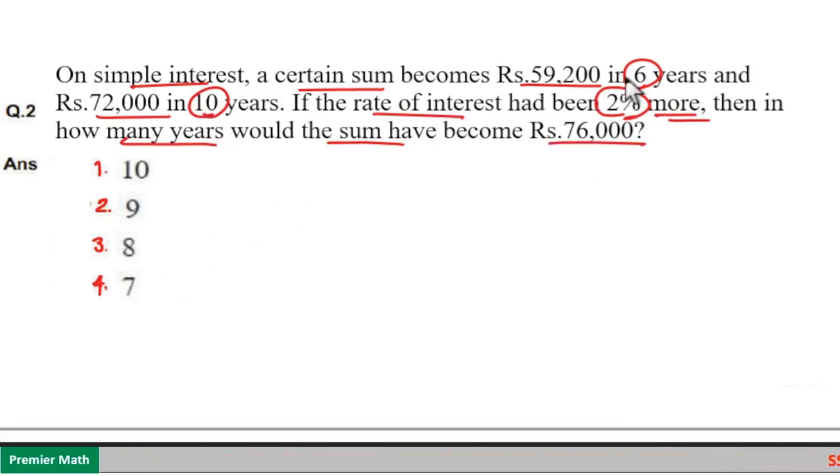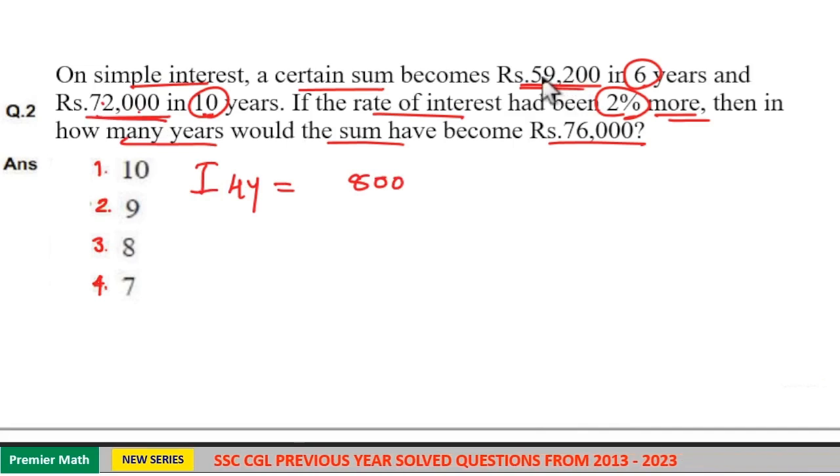The difference between 10 years and 6 years is 4 years. If you take the difference between the 10-year sum and 6-year sum, you get the interest received in 4 years, which is 72,000 minus 59,200. So interest received in 4 years is Rs. 12,800.